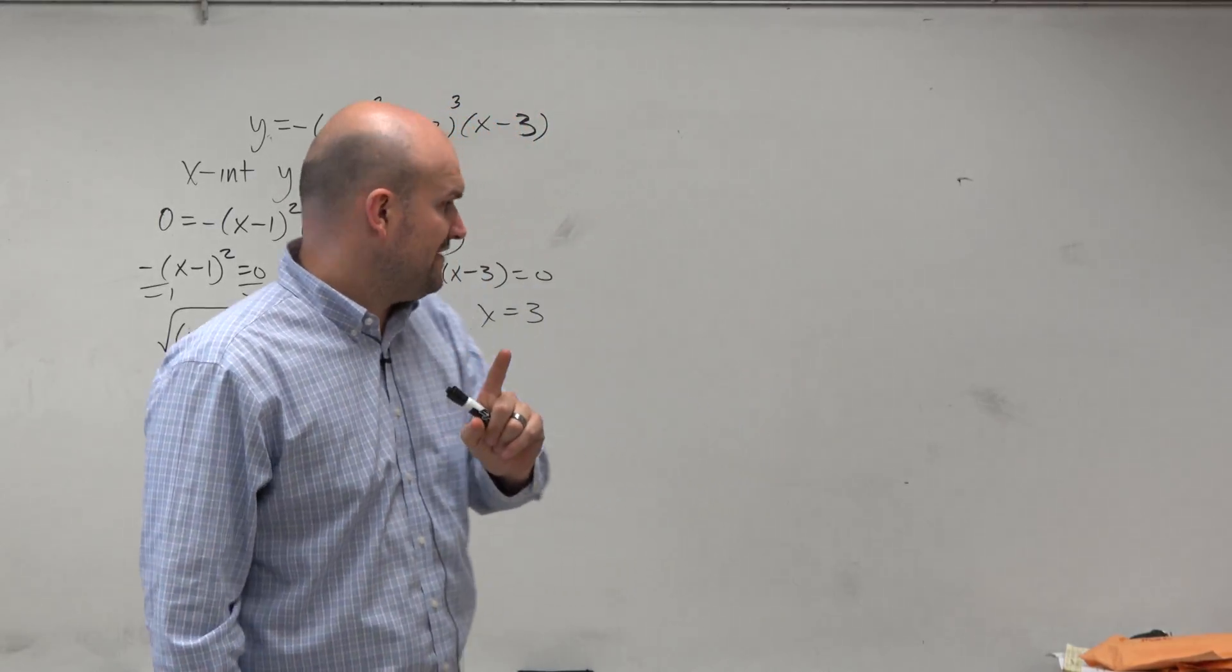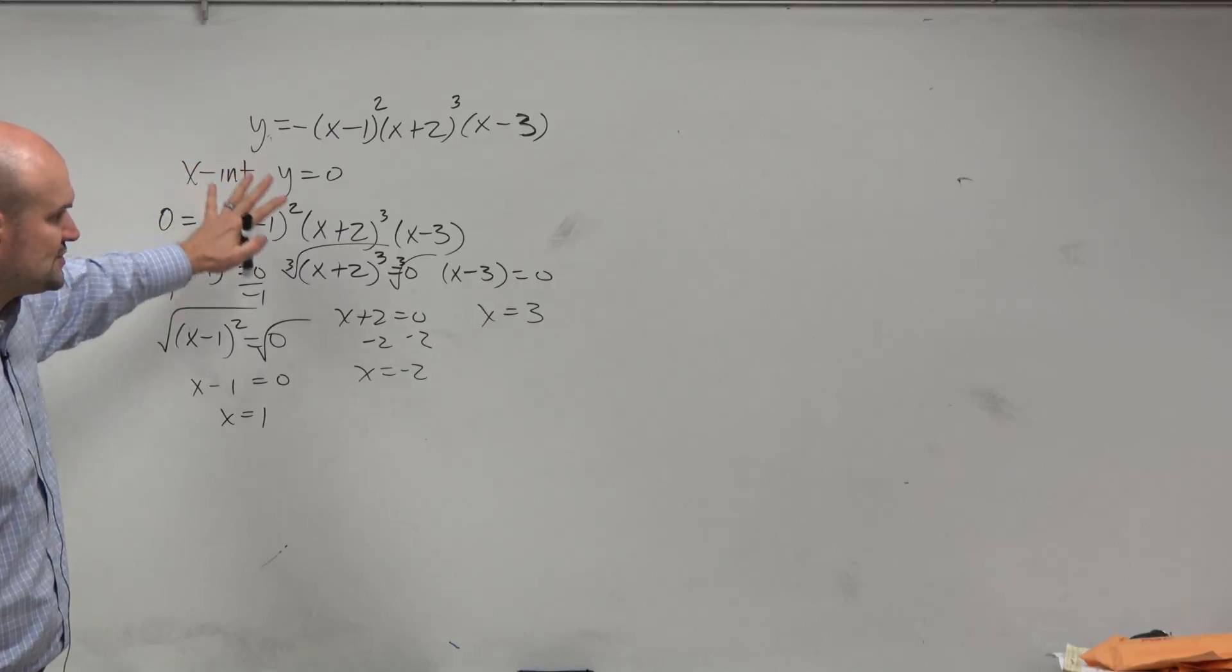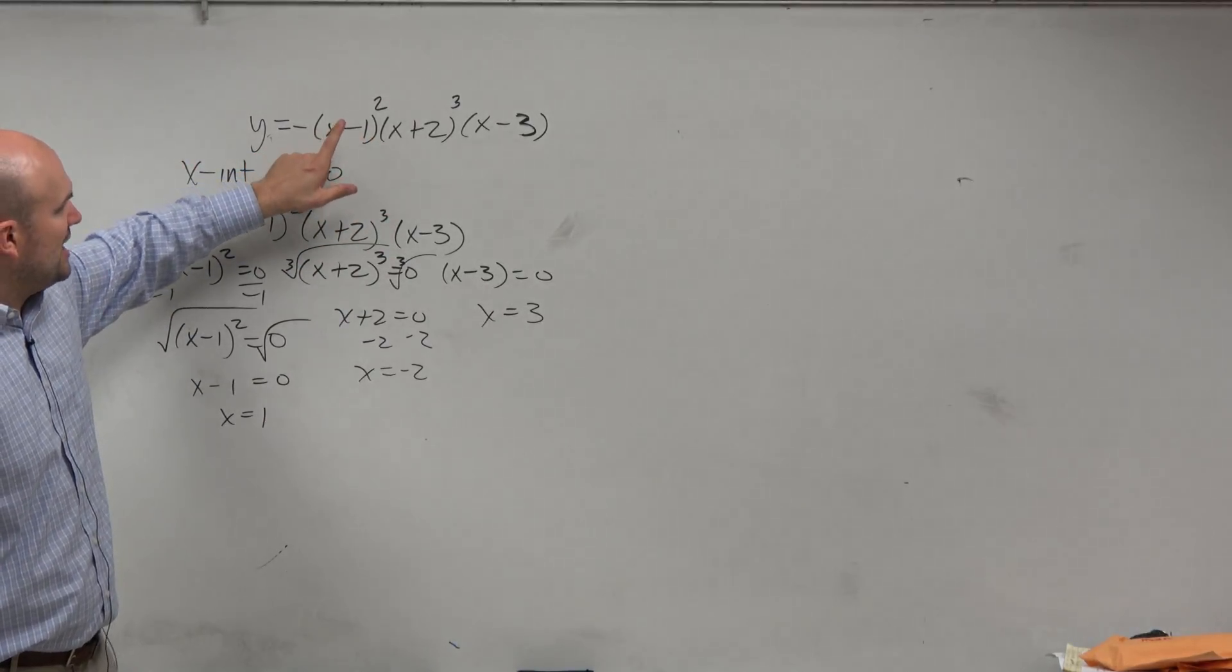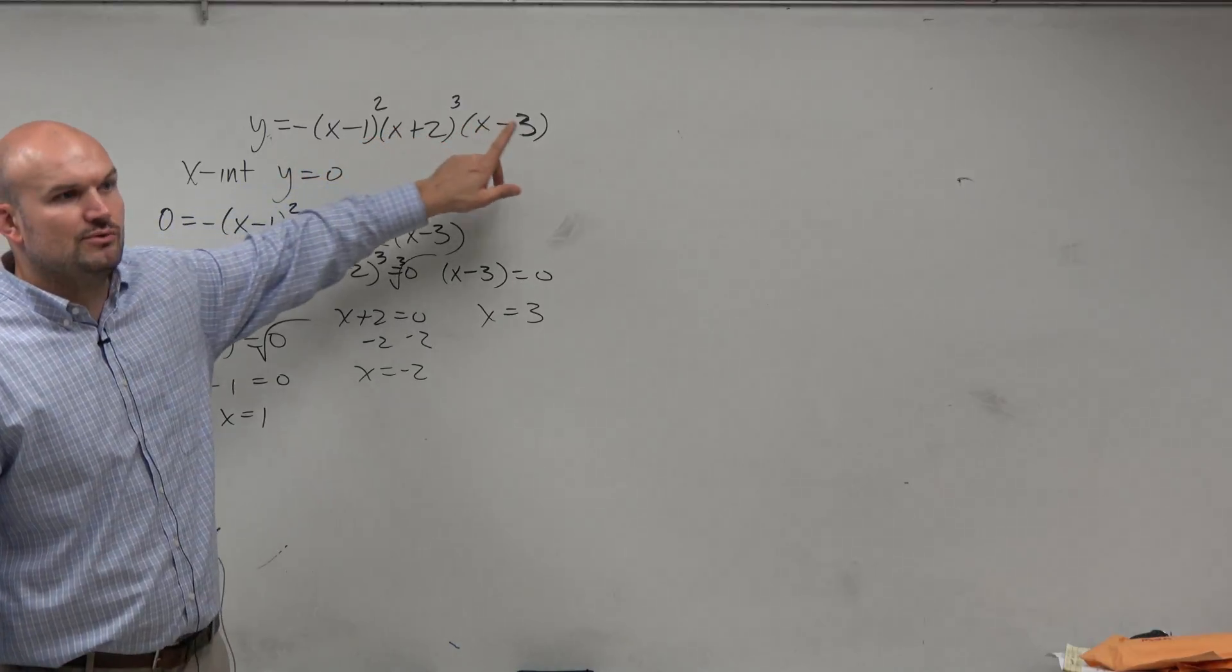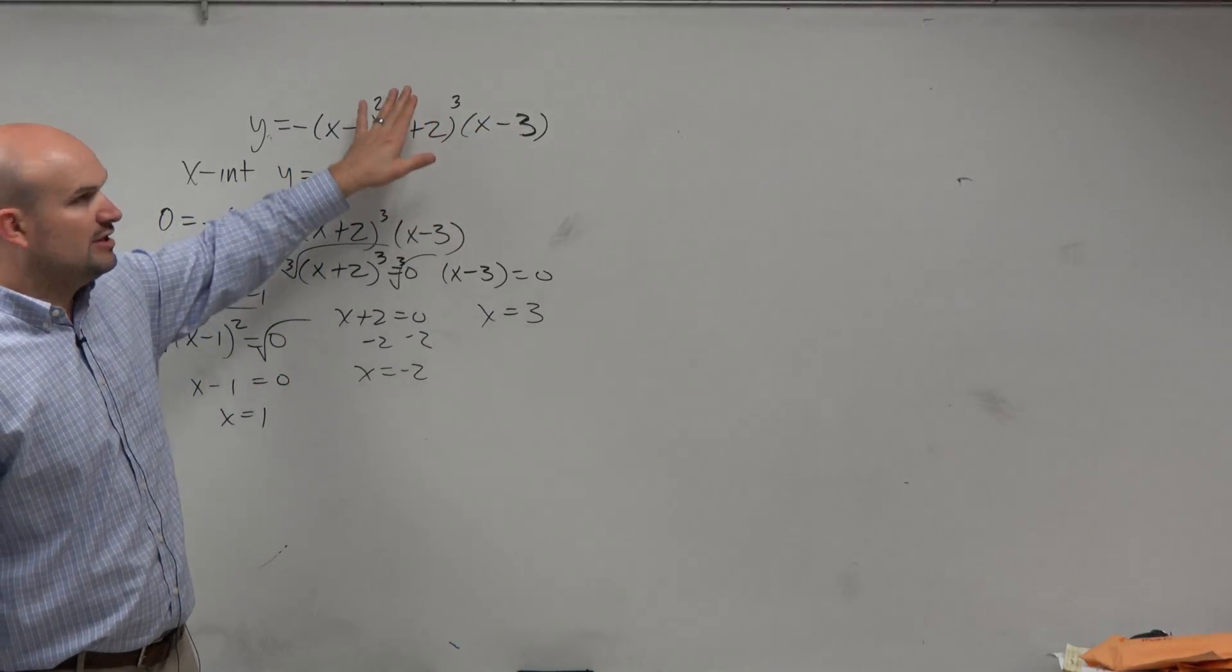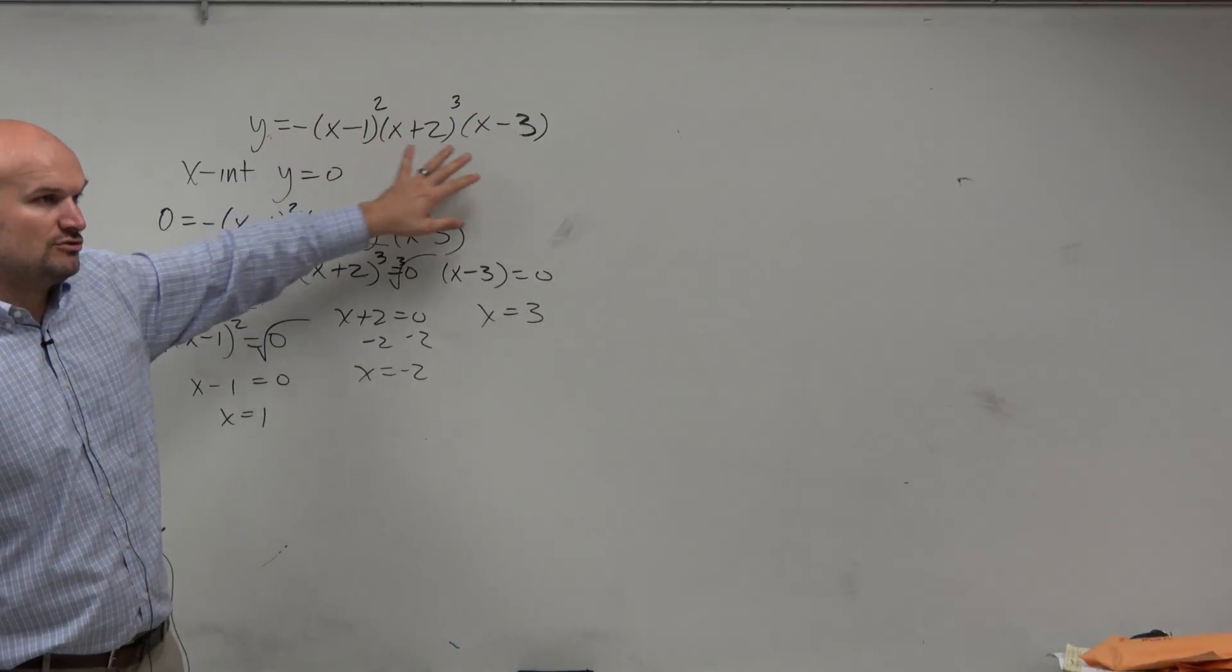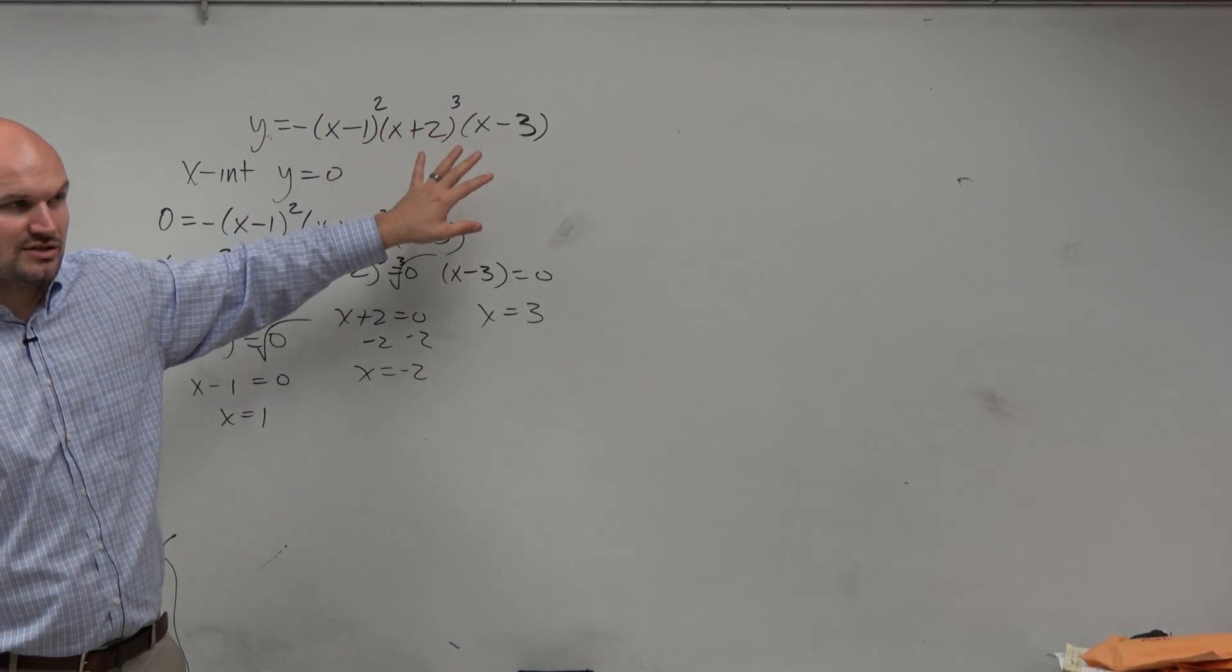Because we're going to look at the graph, and they do have an effect. But I want you guys to understand, for the solving portion, you could have just looked at this and said, the x-intercepts are at x equals 1, negative 2, and 3. It doesn't really matter what these powers are. Now the powers are going to tell us something, but they don't change where the x-intercepts are, or the zeros.